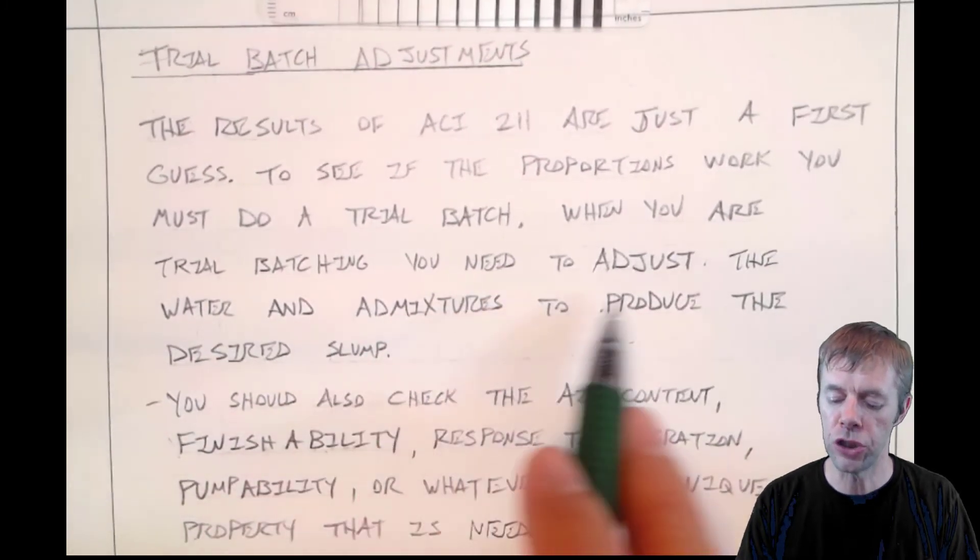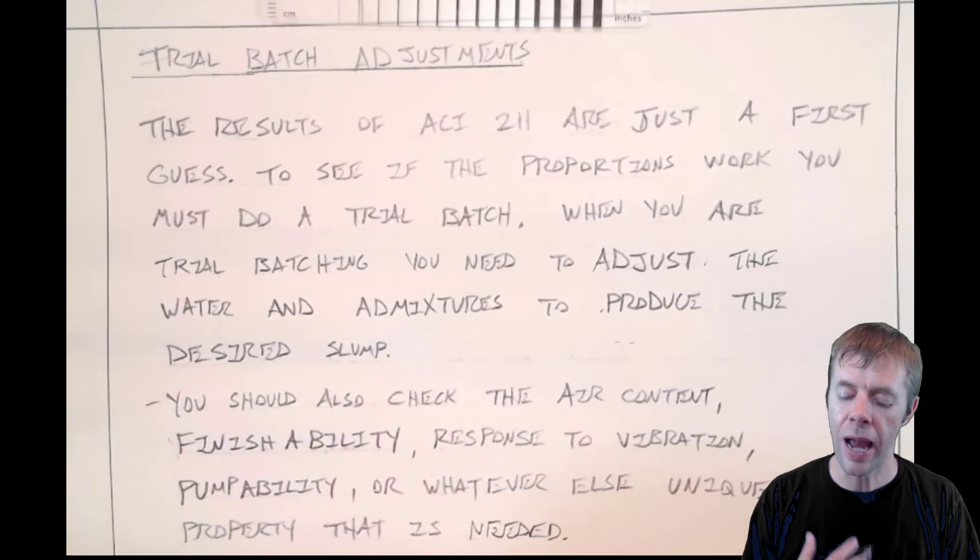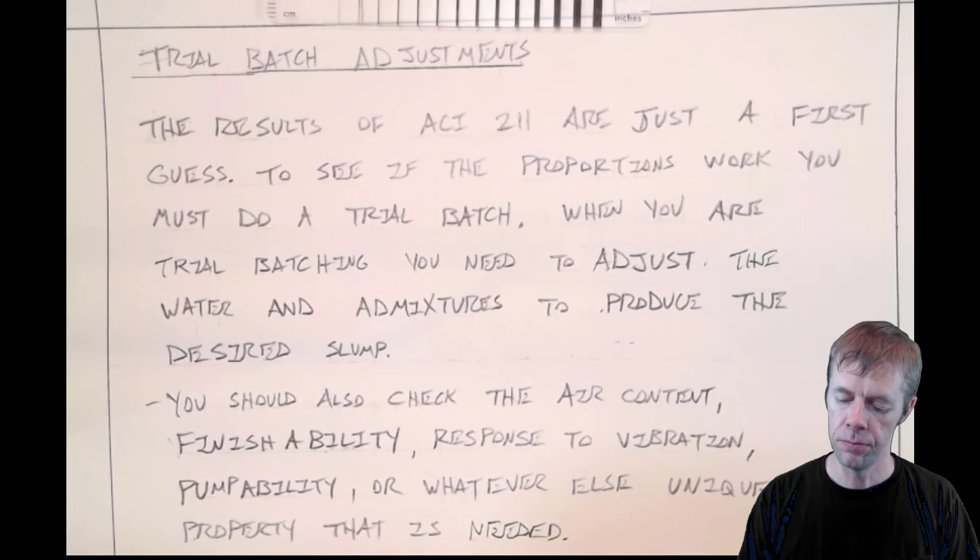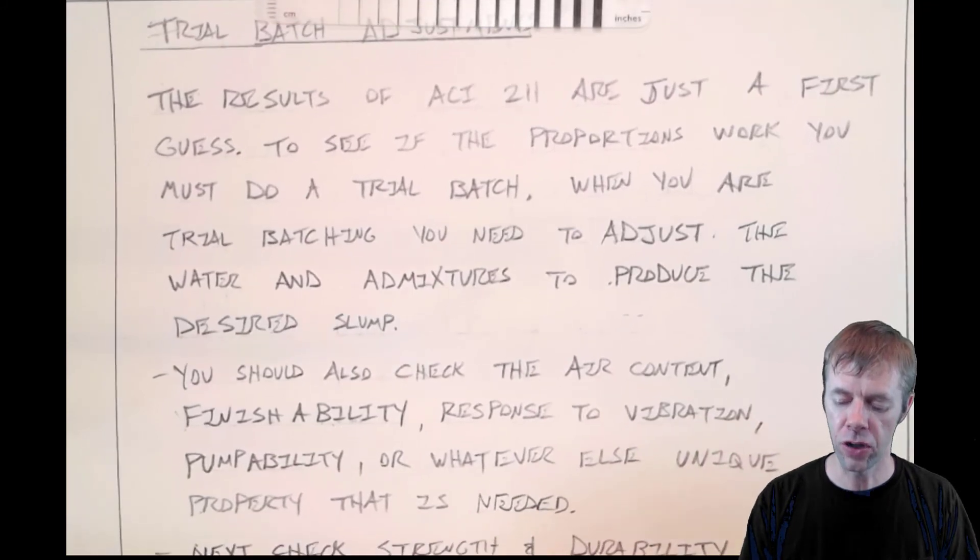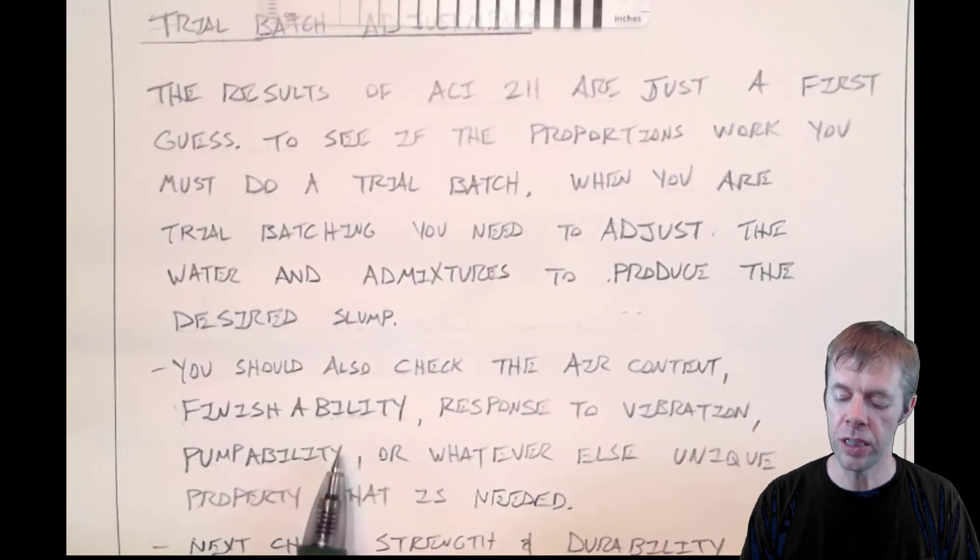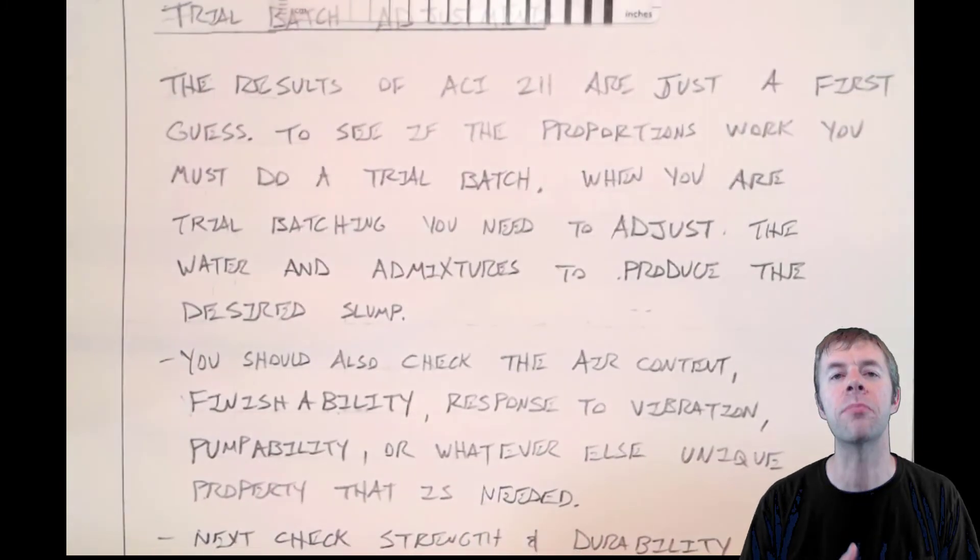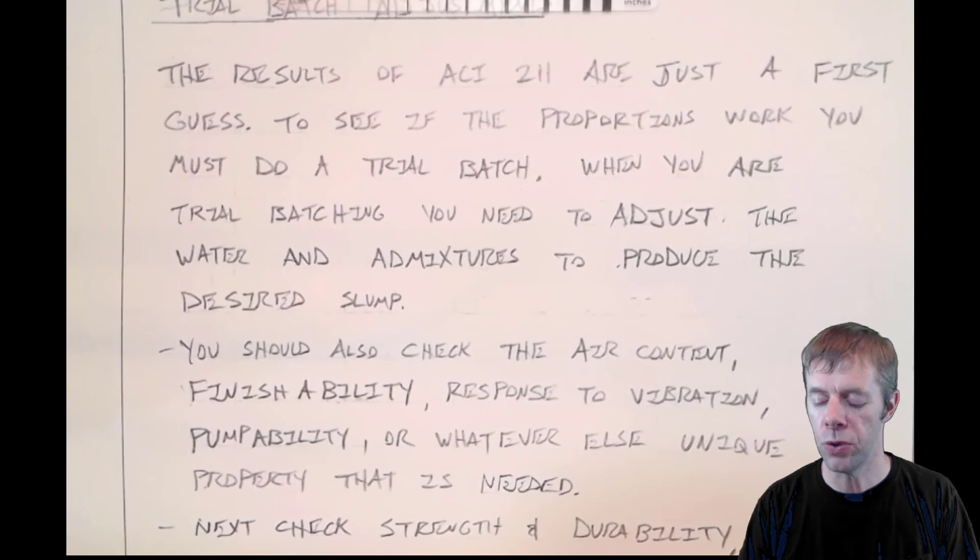So when you're trial batching, you need to adjust the water and admixtures to produce the desired slump. Also, you should check the air content, the finishability, the response to vibration, the pumpability, or whatever else unique property you might need your concrete to do.